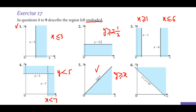Here the unshaded region is on the upside, so we will use y is greater than equal to x. Here the region is on the downward side, so it will be less than. As the line is a dotted line, we will not use any equal sign here. So the unshaded region is on the downside — it is just x plus y is less than 10.